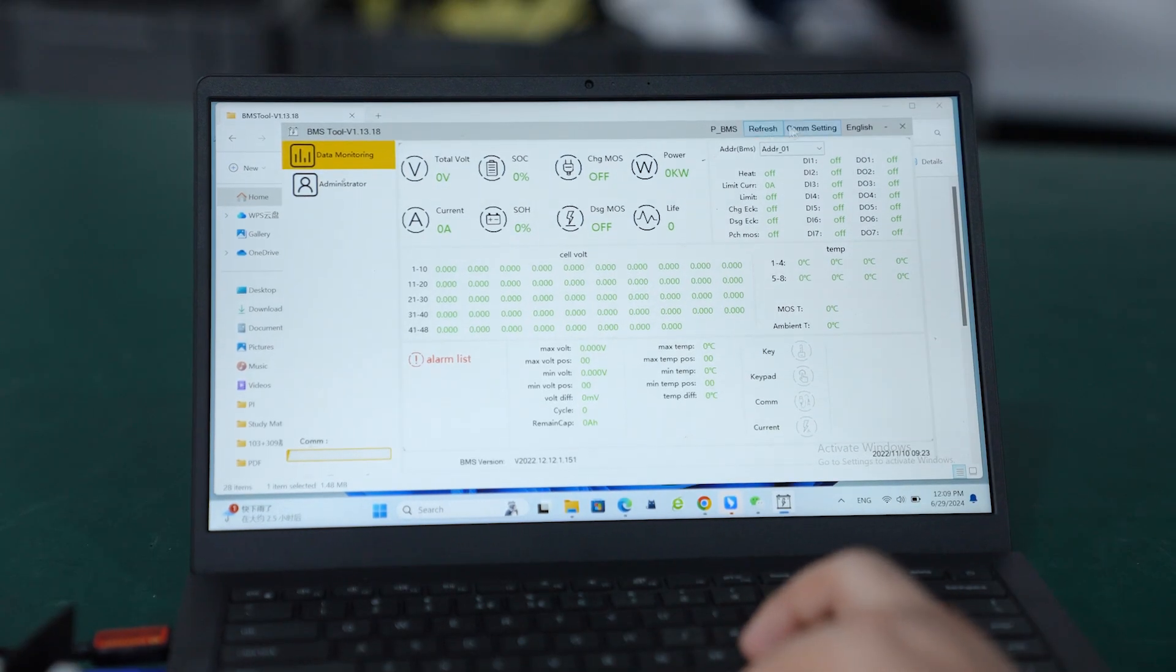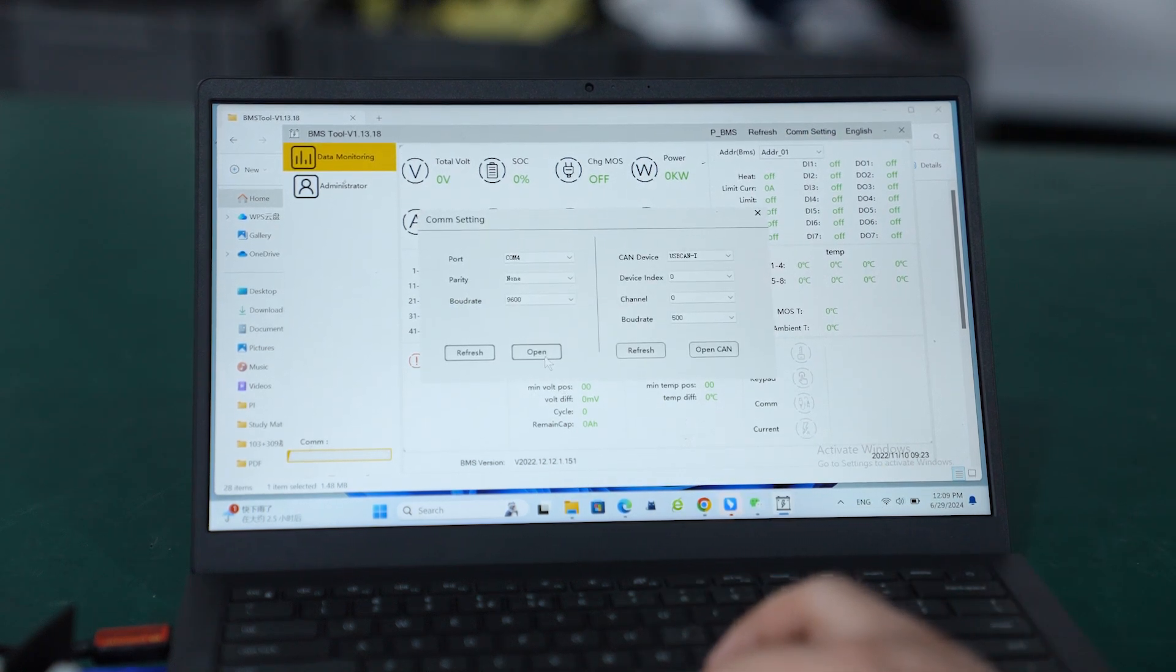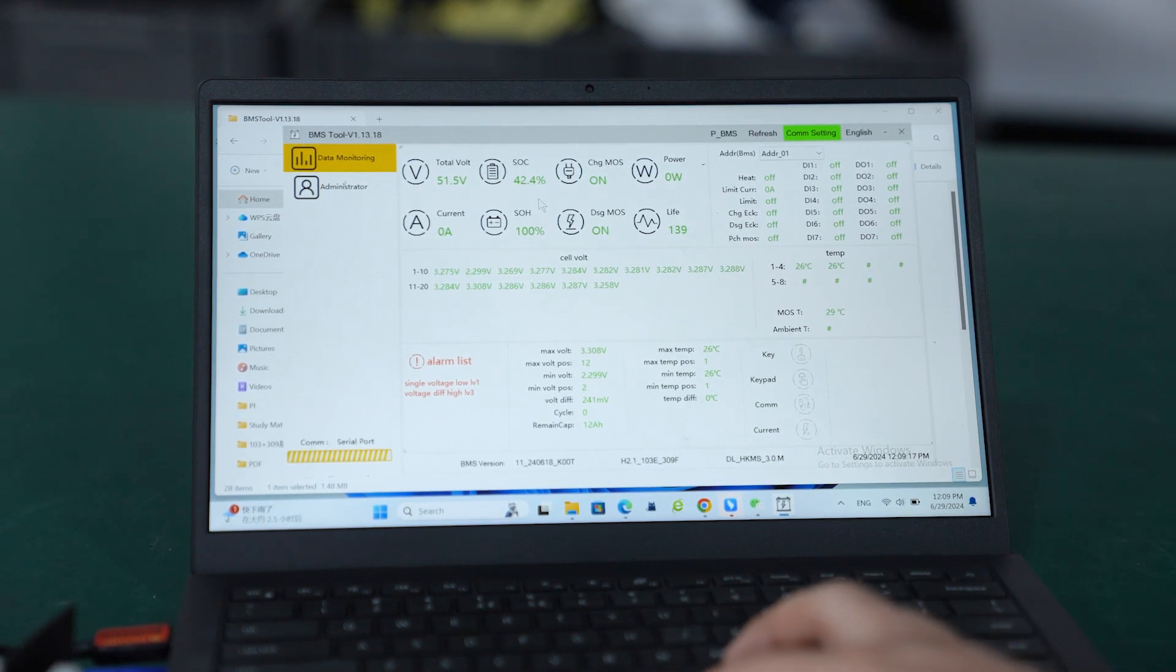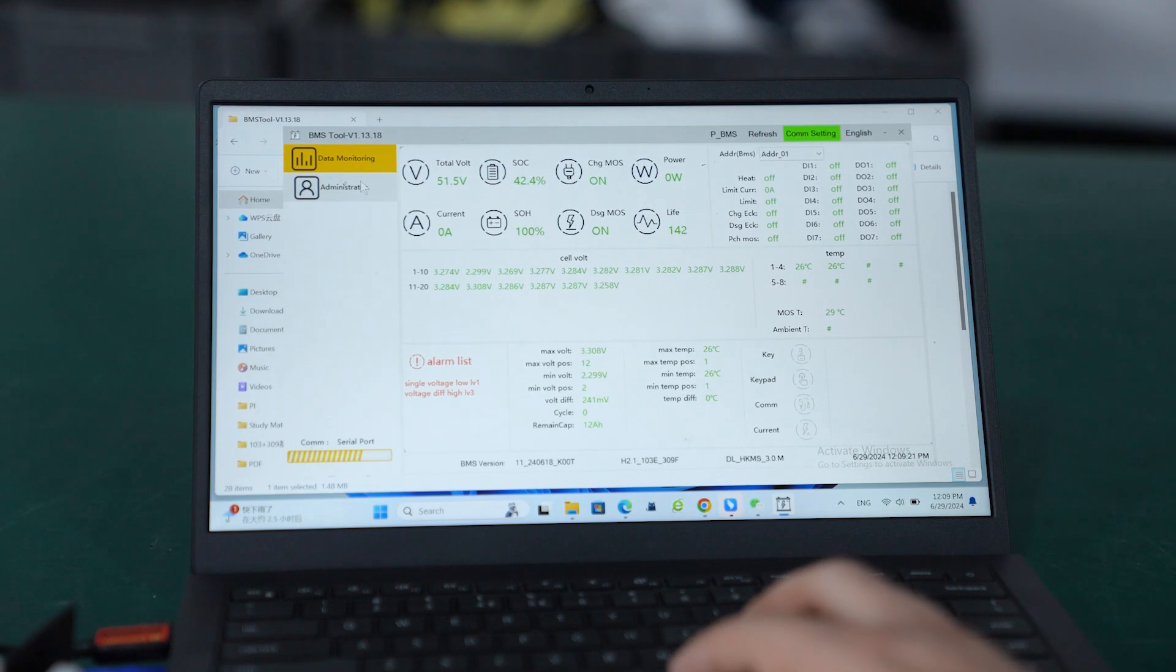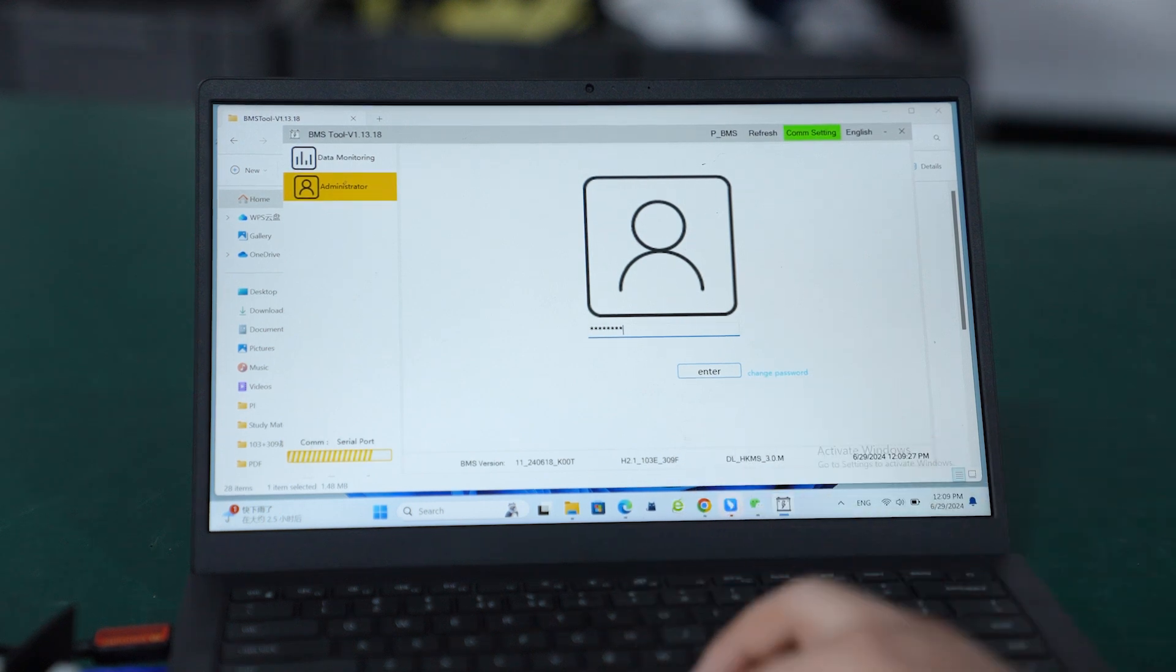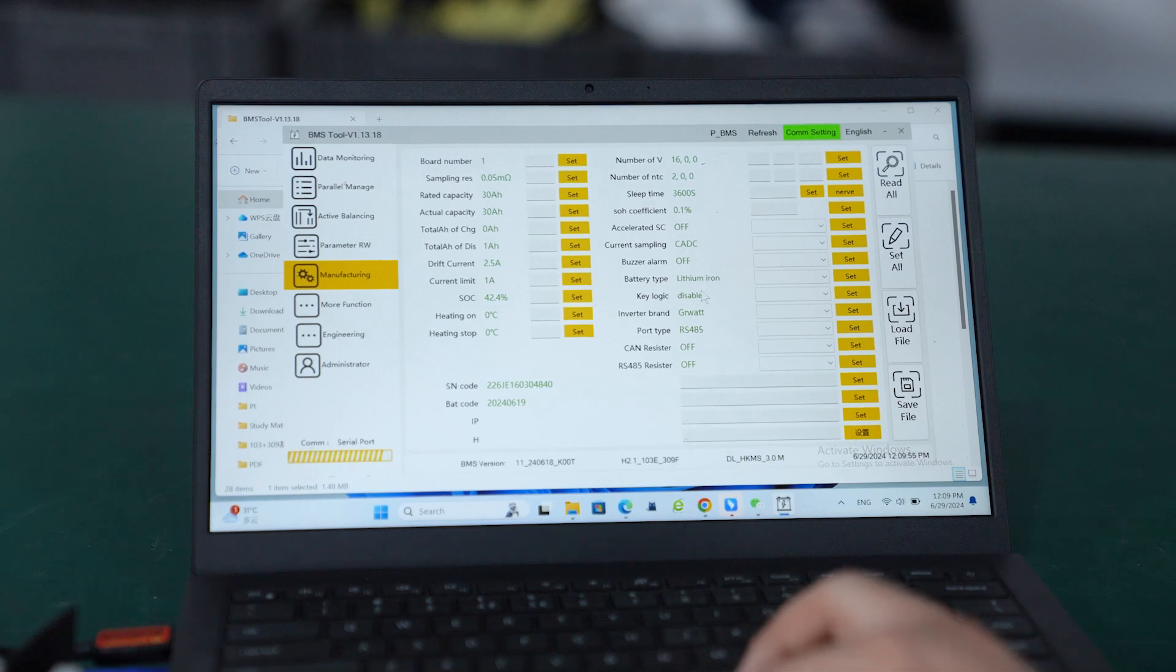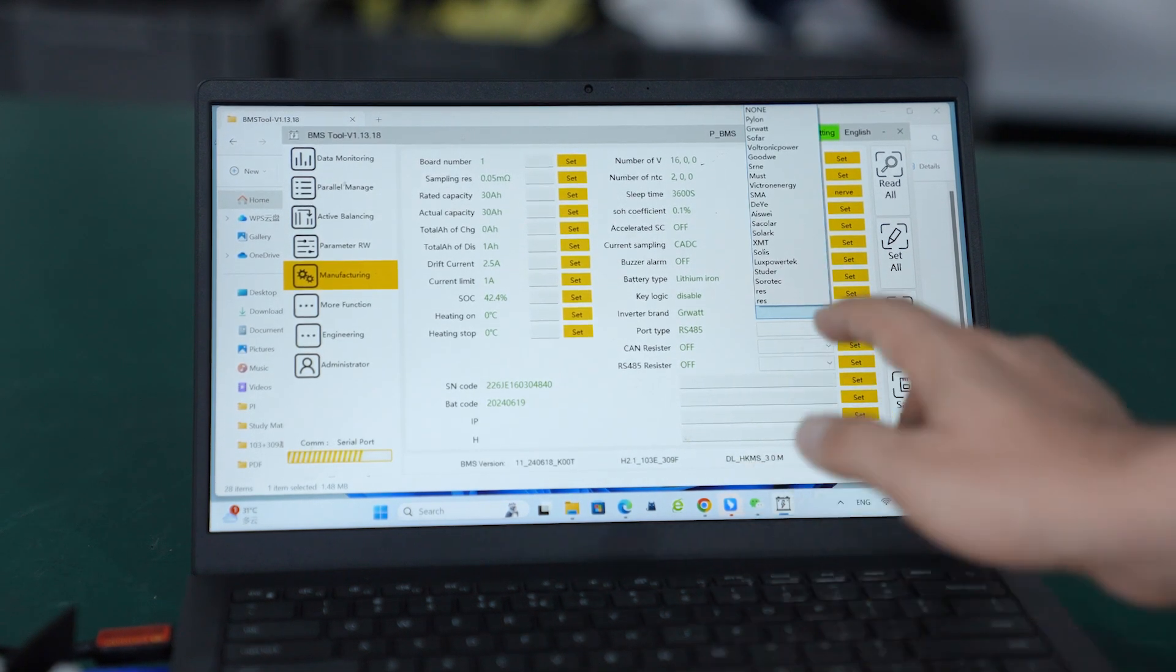Open the PC software and go to common mode. Since we are using RS485, open RS485 here. You can see all the data of the battery pack here: total voltage, SOC, individual cell voltages, everything. Now go to admin. The password for admin is 1-2-3-4-5-6-7-8. Enter.